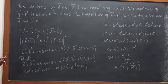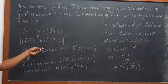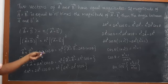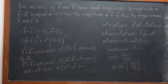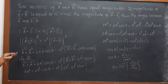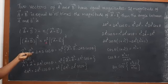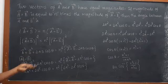We are given that A vector plus B vector is equal to n times of A vector minus B vector. Now, squaring on both sides, that will give A plus B whole square is equal to n squared times A minus B whole square.